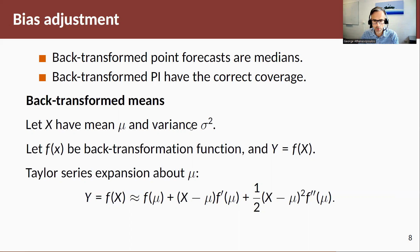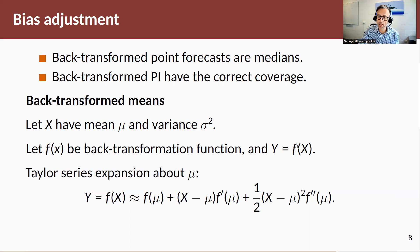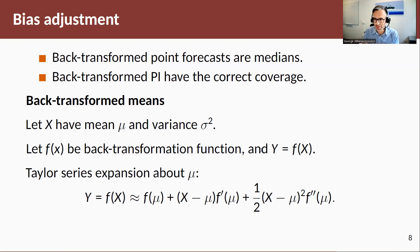Let x have mean μ and variance σ². So x is our transformed variable. Let f(x) be a back-transformation function and y = f(x). So we've started from y, transformed to x, and now we're going from x back to y. To get the mean, we use a Taylor series approximation, which can approximate any continuous function at a point using a polynomial. In this case, we use a quadratic polynomial: y = f(x) ≈ f(μ) plus a linear term plus a quadratic term.